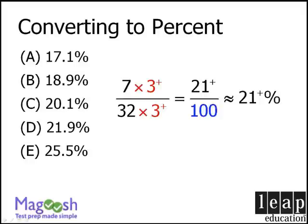Now, when we look at our answer choices, we see that our answer must be D, since it is slightly larger than 21%.